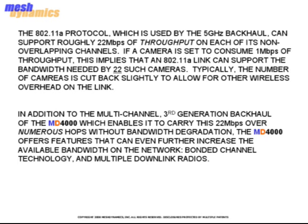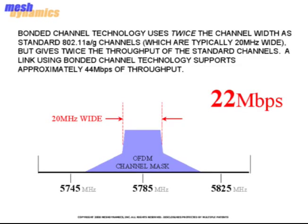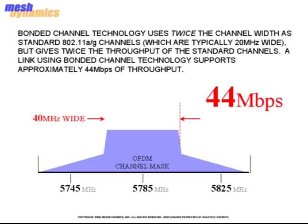Typically, the number of cameras is cut back slightly to allow for other wireless overhead on the link. In addition to the multi-channel, third-generation backhaul of the MD-4000, which enables it to carry 22 Mbps over numerous hops without bandwidth degradation, the MD-4000 offers features that can even further increase the available bandwidth on the network: bonded channel technology and multiple downlink radios. Bonded channel technology uses twice the channel width of the standard 802.11a channel, giving twice the throughput. A link using bonded channel technology supports approximately 44 Mbps of throughput.